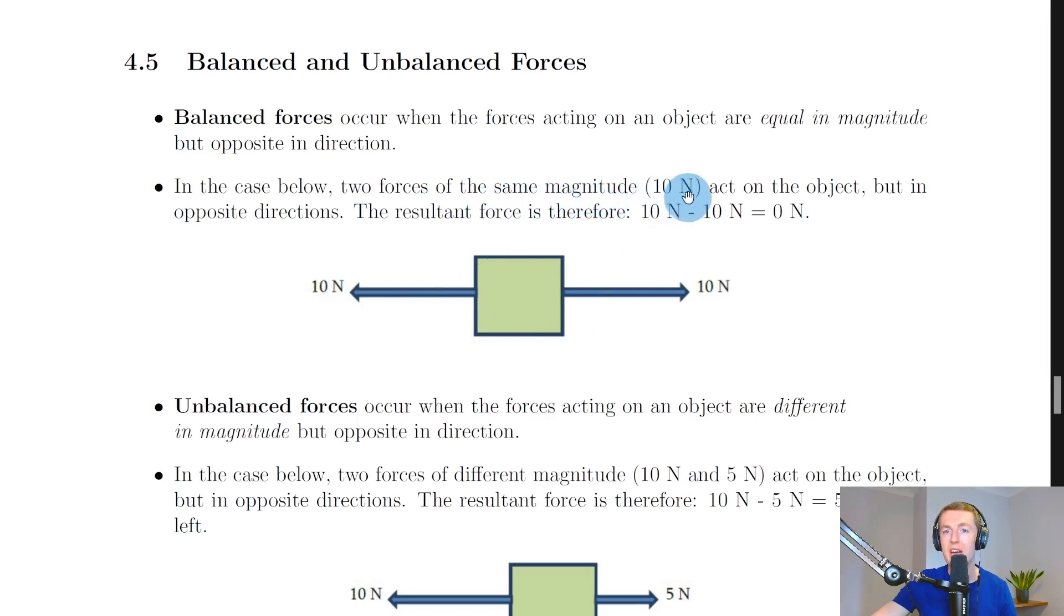forces of the same magnitude, 10 newtons, act on the object but in opposite directions. So one's going to the left, one's going to the right. We can therefore say the resultant force is 10 newtons minus 10 newtons, which gives us zero newtons. So this object would stay where it is, or it would continue to travel at a constant speed if it was already moving.